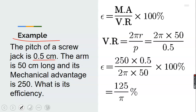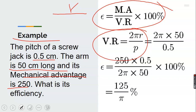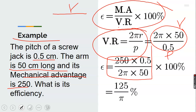Example: the pitch of a screw jack is 0.5 centimeters, the arm (tommy bar) is 50 centimeters, and its mechanical advantage is 250. What is the efficiency? First, calculate the velocity ratio: VR equals 2πR over P equals 2π times 50 over 0.5, which equals 200π. Then efficiency equals MA over VR times 100%, which equals 250 divided by 200π, times 100%. You can leave the answer in terms of π or divide further to get the numerical efficiency of the screw jack.